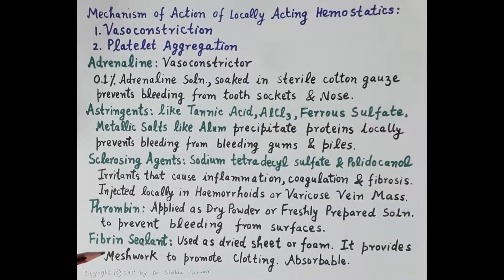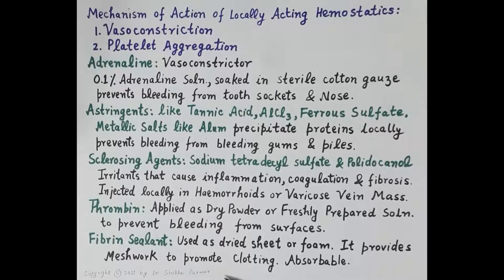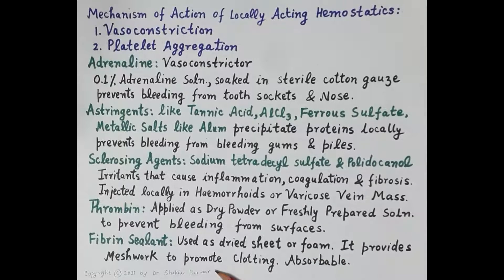The next locally acting hemostatic agent is fibrin sealant. It is used as a dried sheet or foam, derived from plasma, and when placed on the wound it provides a meshwork to promote clotting. Fibrin sealant is also absorbable.